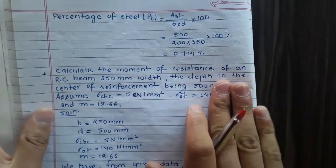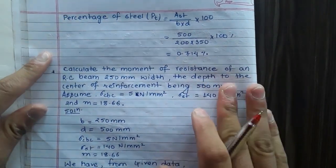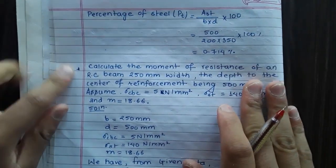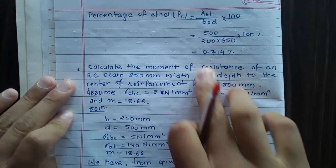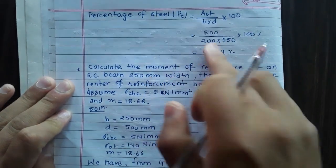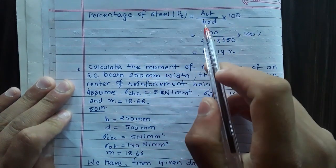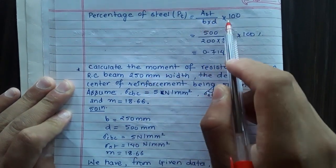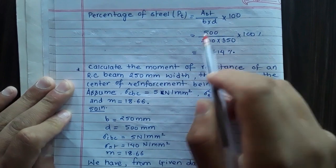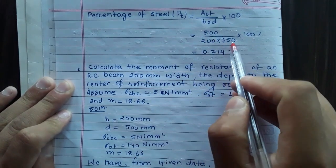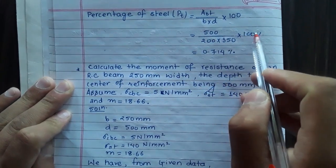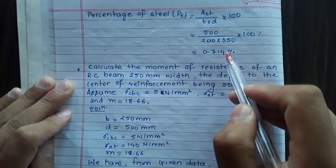To find the percentage of steel in tension: PT = (AST / (b × d)) × 100 = (500 / (200 × 350)) × 100 = 0.714%.